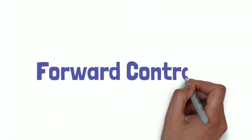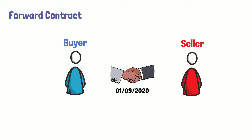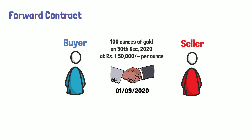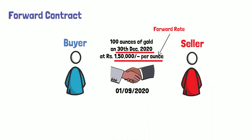Let us understand forward contracts with the help of an example. Suppose a buyer and a seller enter into an agreement on 1st September 2020 to purchase 100 ounces of gold on 30th December 2020 at rupees 1,50,000 per ounce. The rate per ounce which the buyer and seller have agreed to transact on 30th December 2020 is called the forward rate.